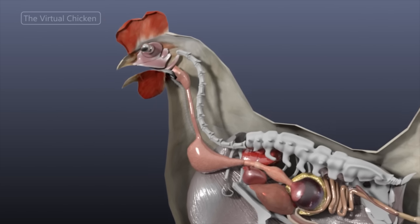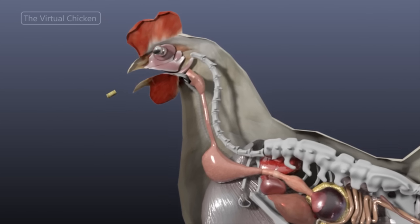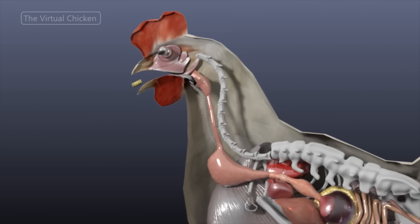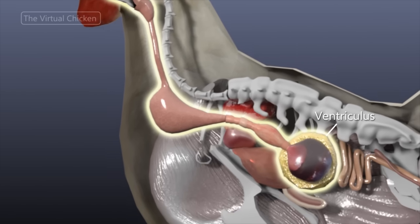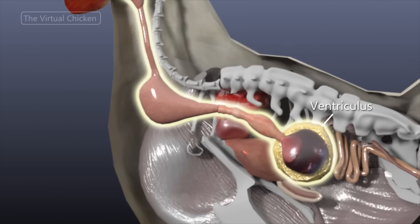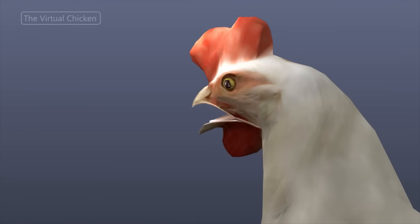Chickens don't have teeth or jaw muscles. Instead, they use a lightweight beak to swallow food particles whole. These particles are later broken down by the ventriculus or the gizzard, which is located within the body cavity. The upper beak is covered in hard keratin.